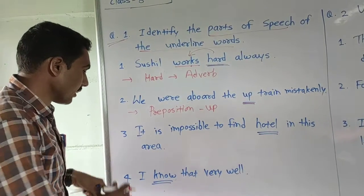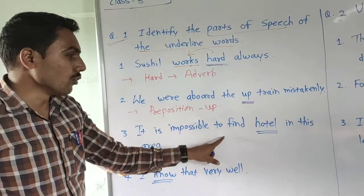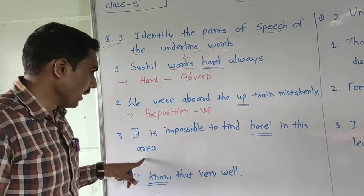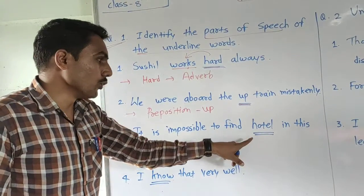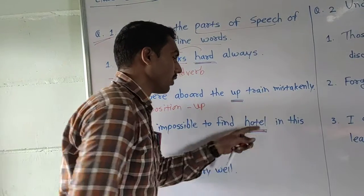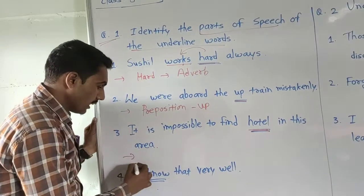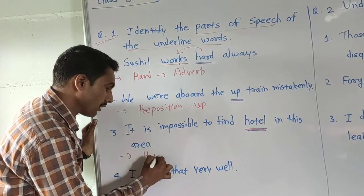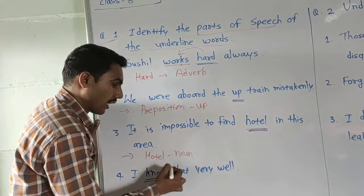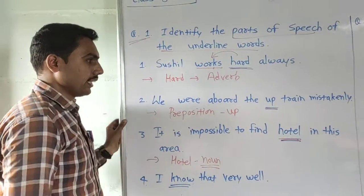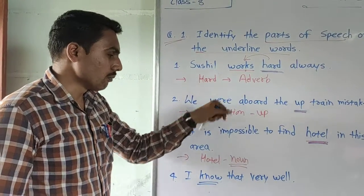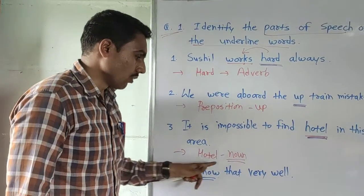The next sentence: 'It is impossible to find a hotel in this area.' The underlined word is 'hotel.' You can easily say that hotel is a noun. Hotel is a noun.